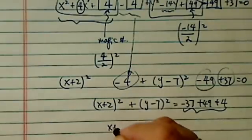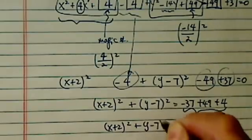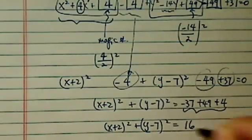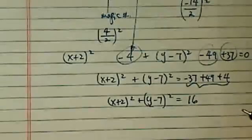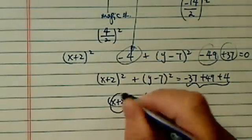So (x + 2) squared plus (y - 7) squared is equal to, what do you know, it's a perfect square, 16.